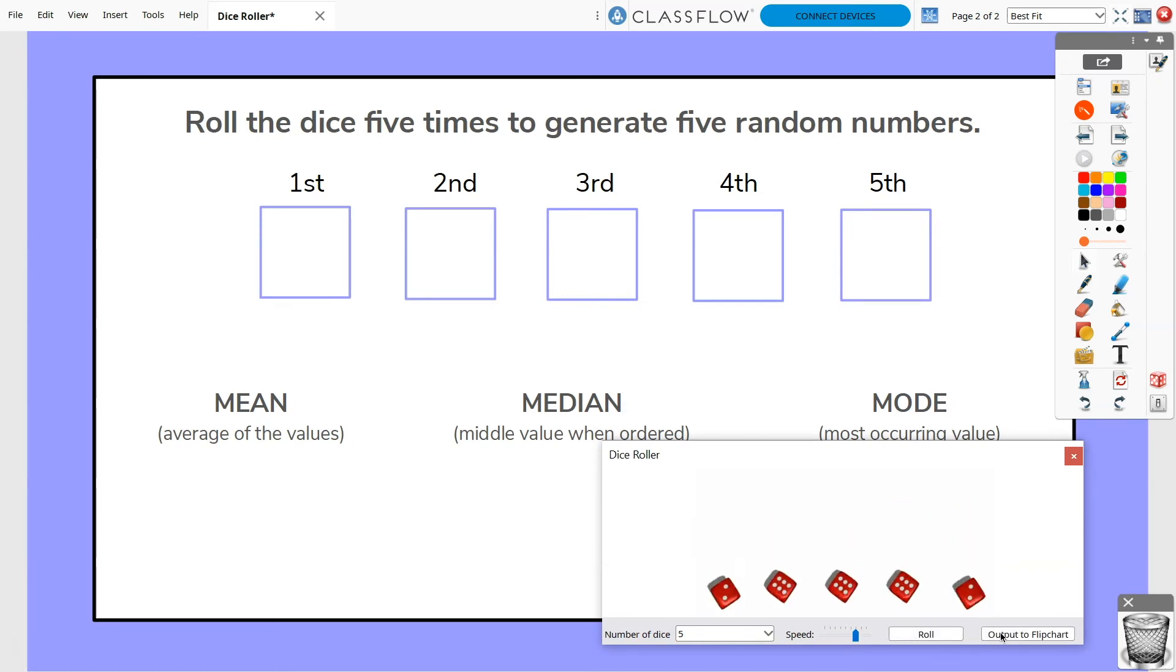The Output to Flipchart button adds the dice total to your current flipchart page.